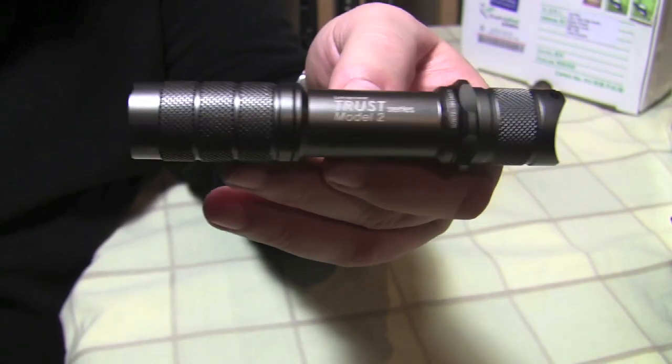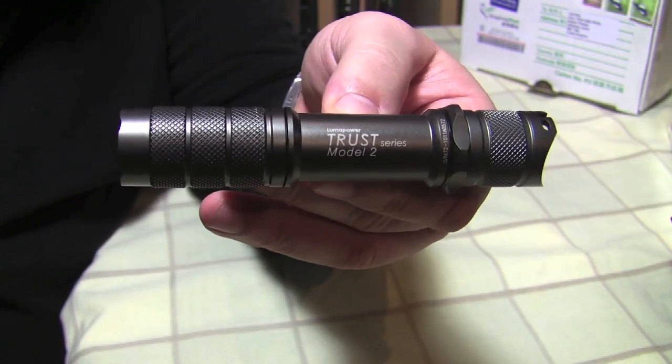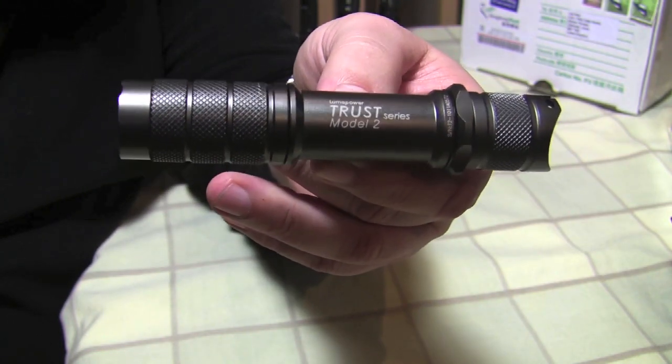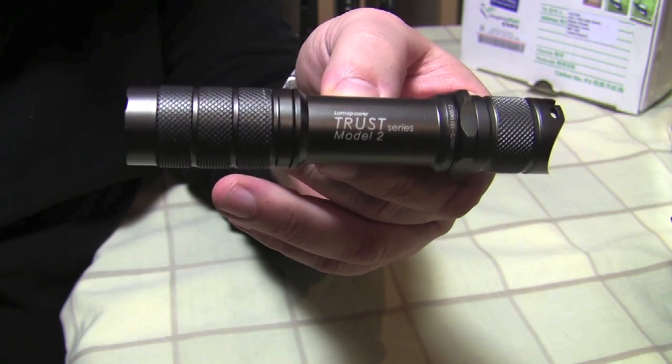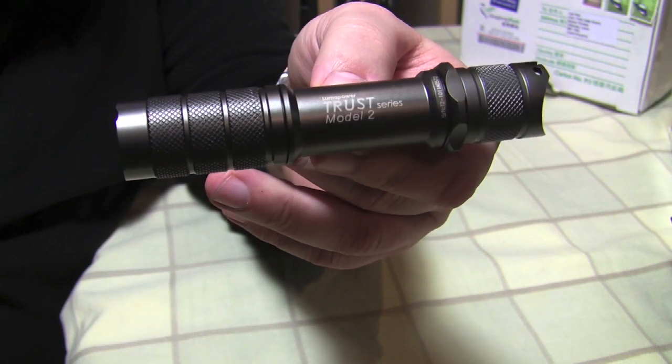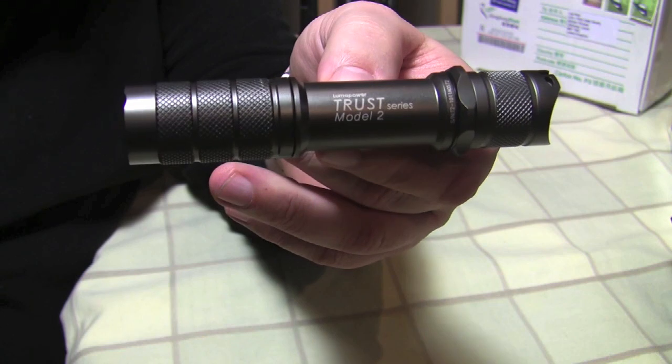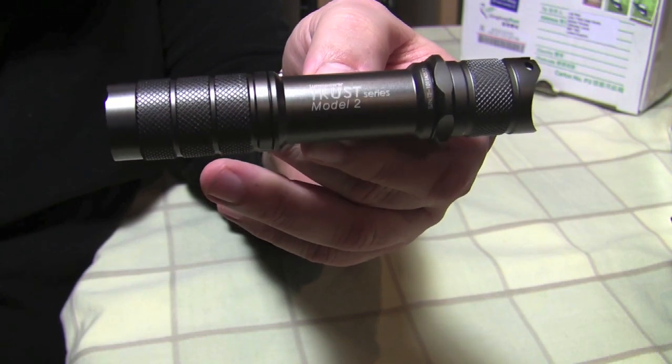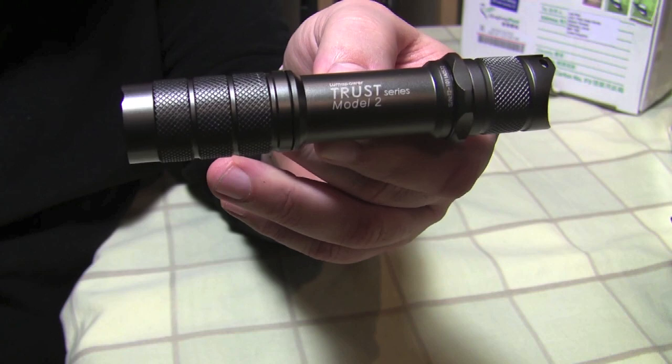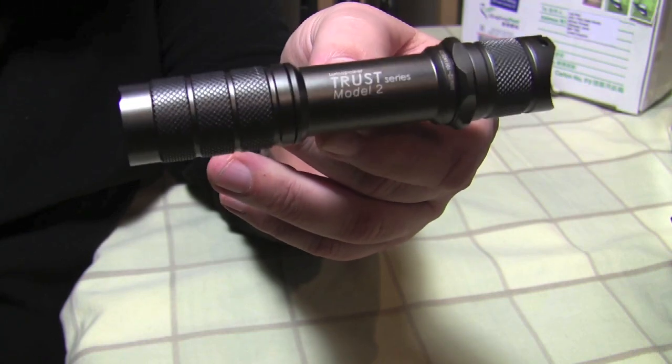The light is capable of running on anything from 3V up to 12V so suitable for use with one 18650 cell, two primary CR123s, two rechargeable 123s at 3V each or you can even use the 3.7V 16340s to give you the full brightness.